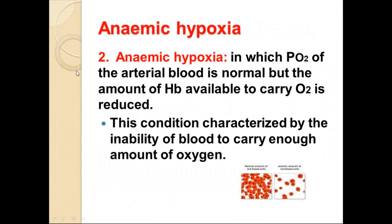The next type is anemic hypoxia. In anemic hypoxia, the cause relates to reduced RBC levels or hemoglobin problems. This may be due to altered hemoglobin — hemoglobin that is not in its normal form — or it can result from carbon monoxide poisoning. The partial pressure of oxygen in the arterial blood is normal, but the amount of hemoglobin available to carry oxygen is reduced.